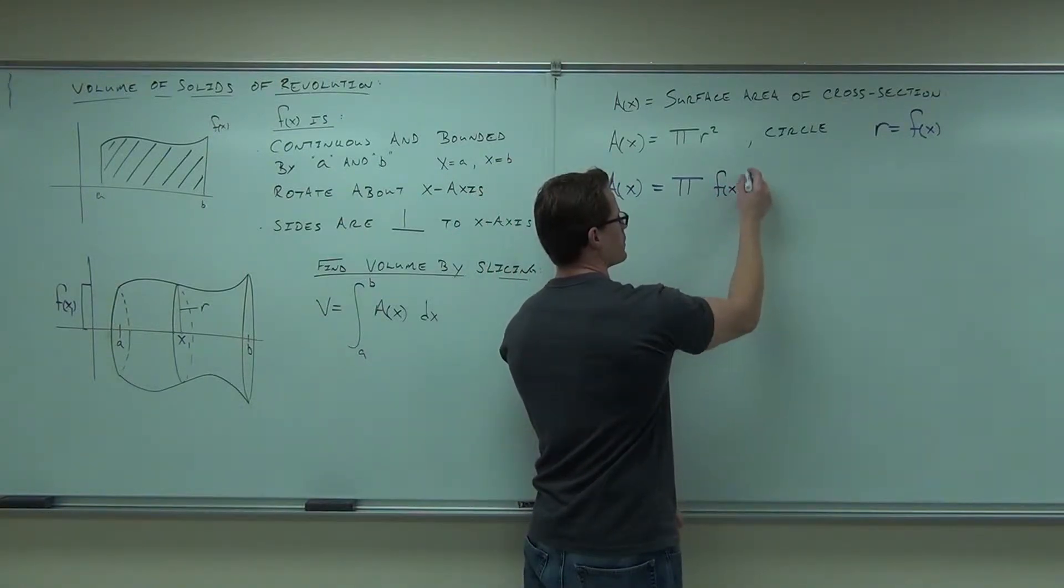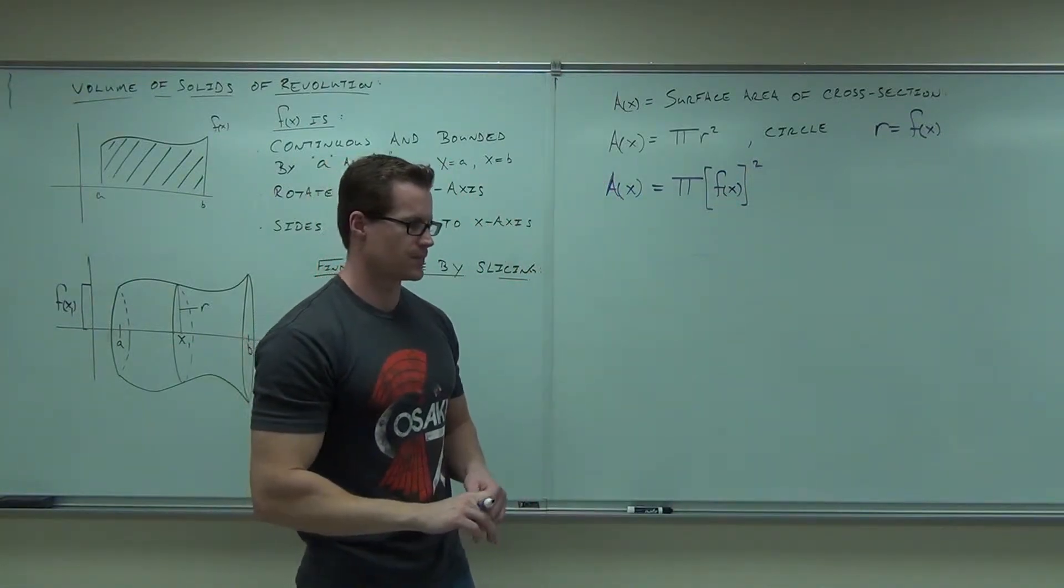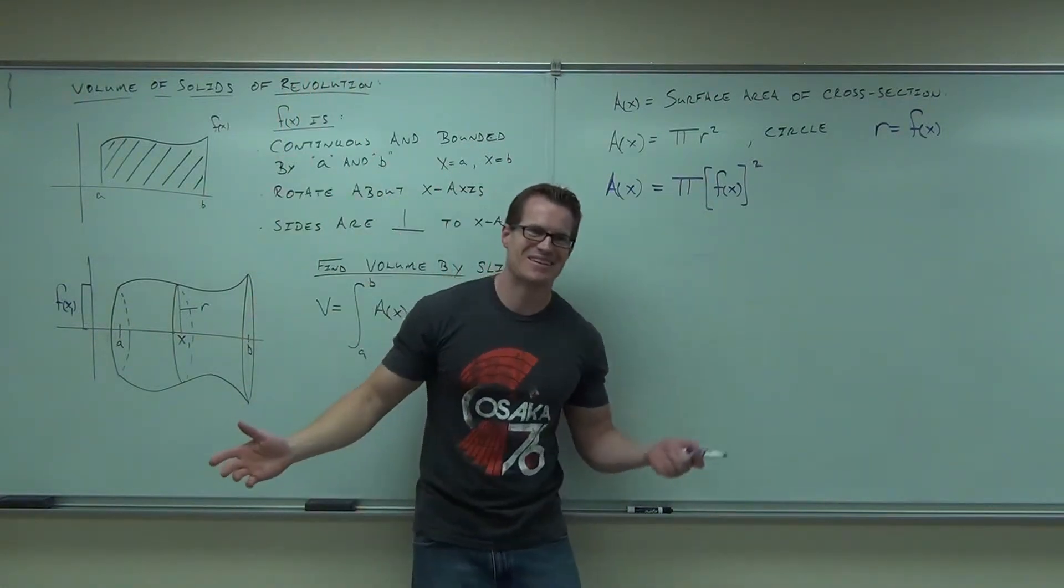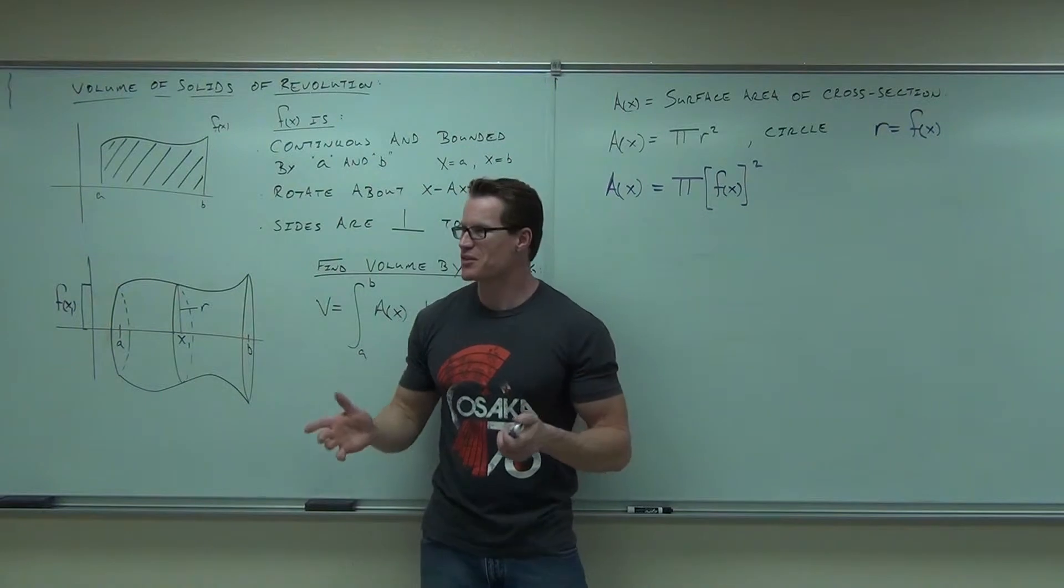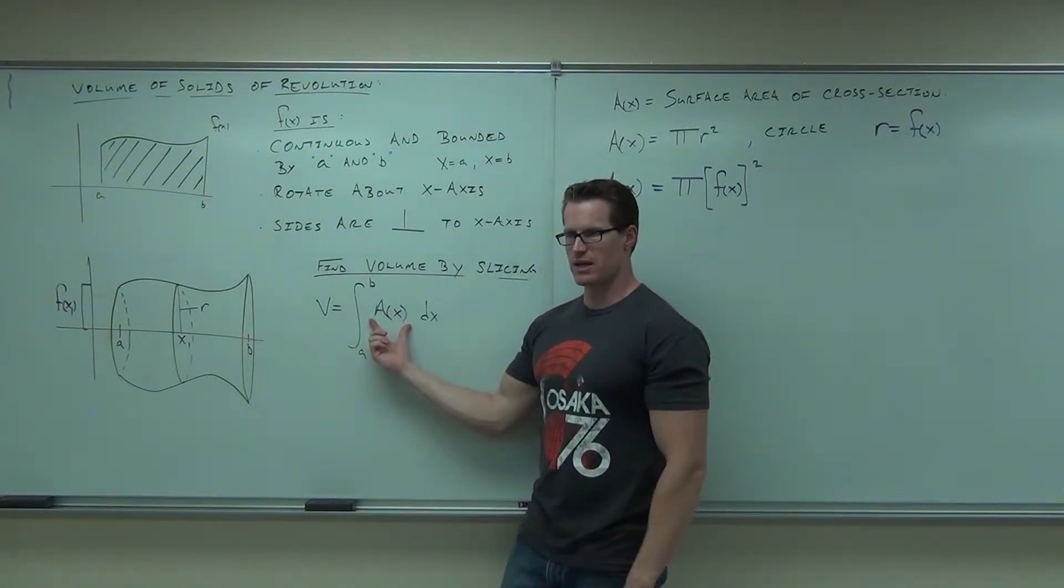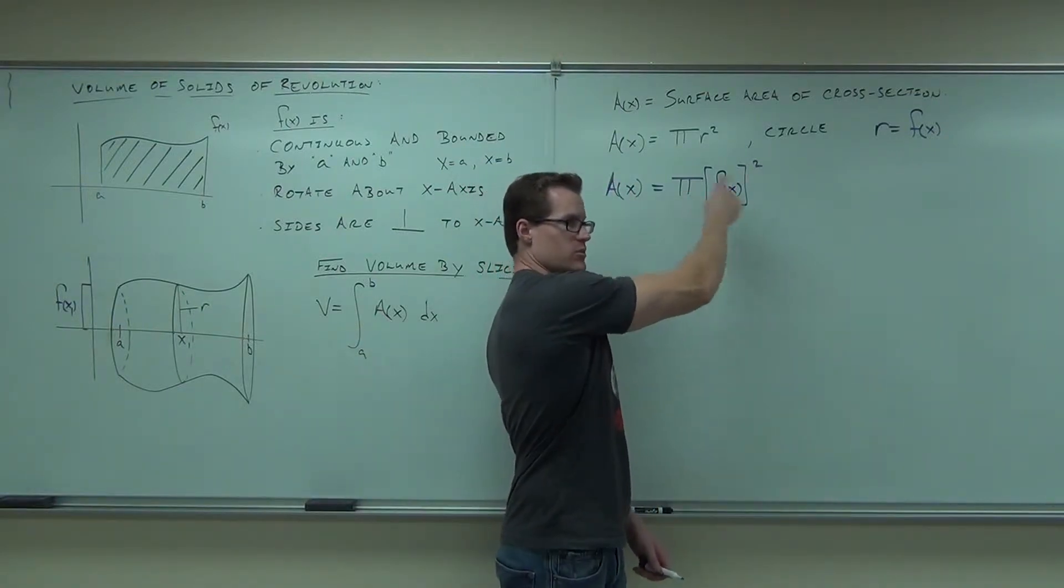And then what? Very good. How many of you have been able to follow that? Hey, guess what? You're done. You're done. That is the method, because look, what we were looking for is A of x, the area in relation to some variable x, and now we have it. This is in terms of x.